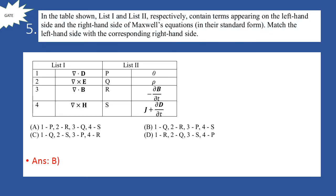Next problem: in the table shown, list 1 and list 2 contain terms appearing on the left-hand side and right-hand side of Maxwell's Equations respectively. Match the left-hand side with the corresponding right-hand side. For del dot D — this is based on Gauss' law for electric field — del dot D equals rho, so the answer is Q. For del cross E, it equals minus dou B by dou t, according to Faraday's Law. For del dot B, it equals zero. So option B is the right answer.